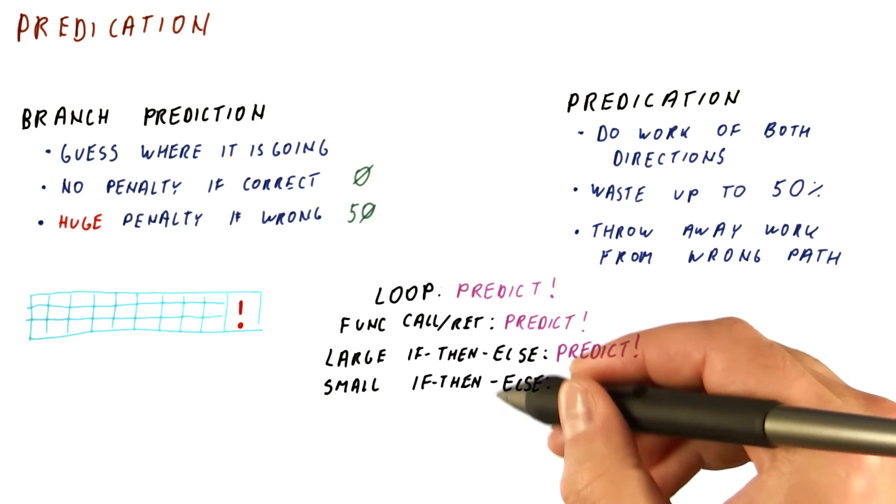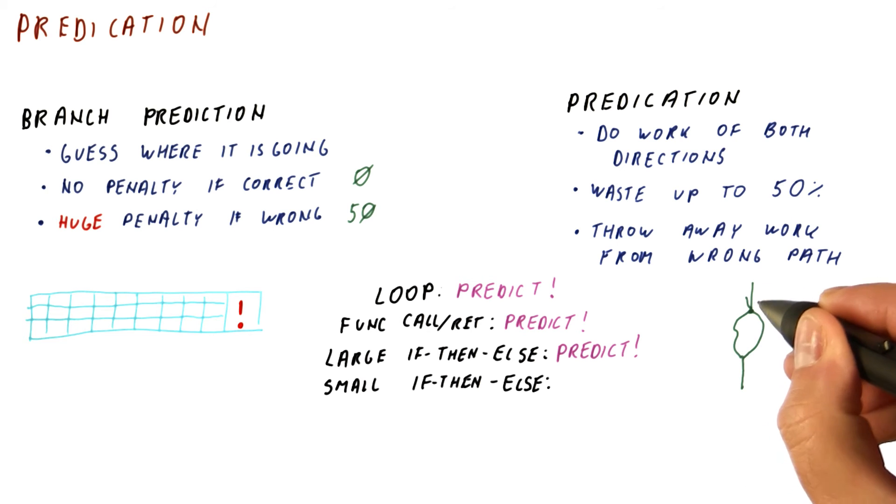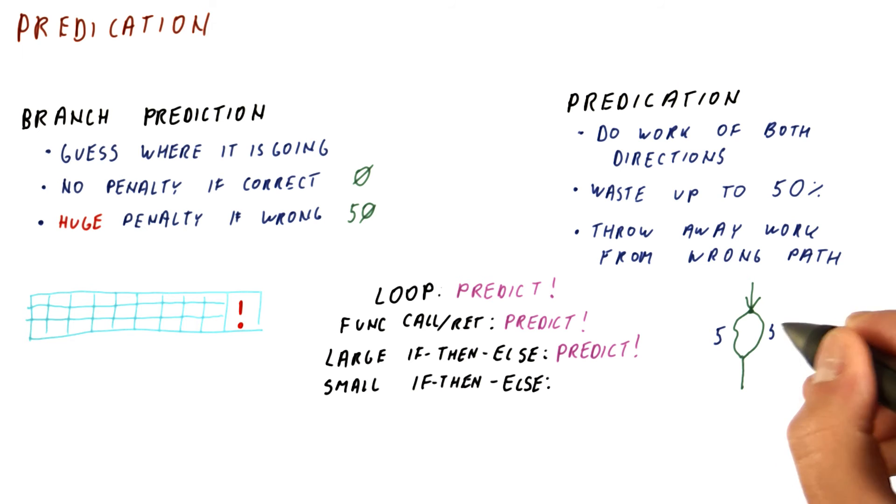But let's see how things look like for a small if-then-else. Let's say that we have a decision to make. And depending on the decision, we have the then or the else path. But let's say each is now something like five instructions long. Now it becomes interesting.